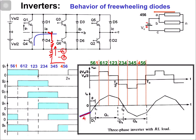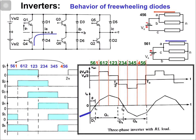Before switch Q1 was turned on, switch 4 was conducting. Once you turn on switch Q1, the inductor resists the change in current. You have connected the positive terminal to this point, so you have the positive voltage there. Because of the inductor response, a high positive voltage appears, which turns on diode D1.